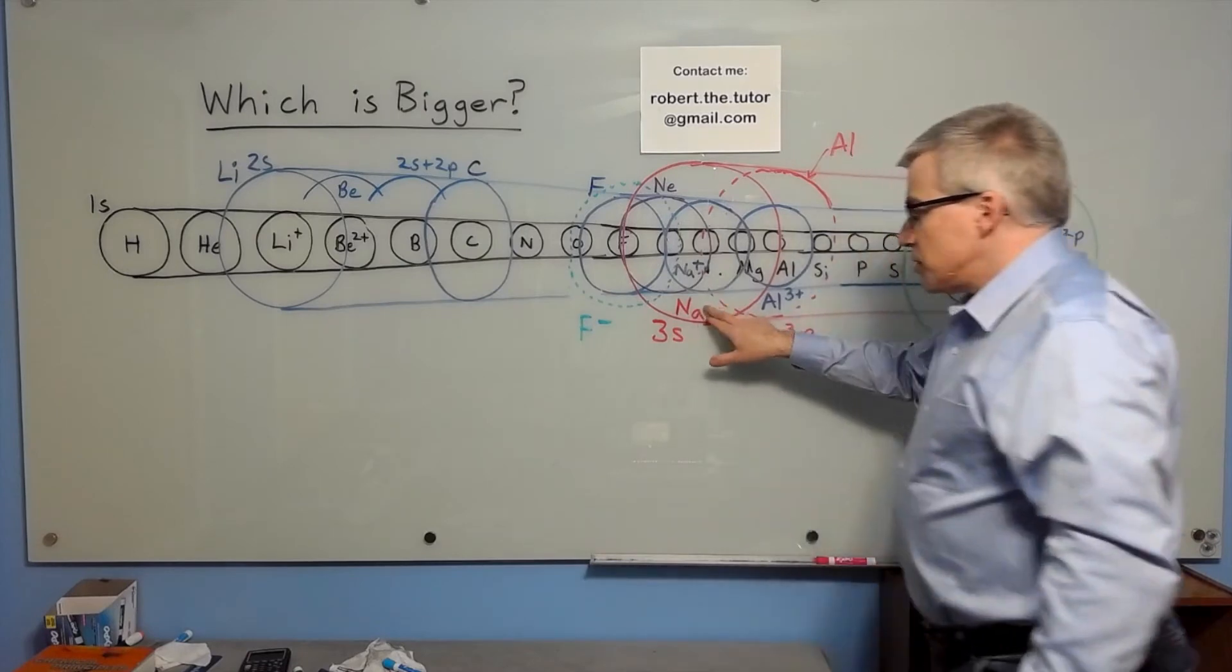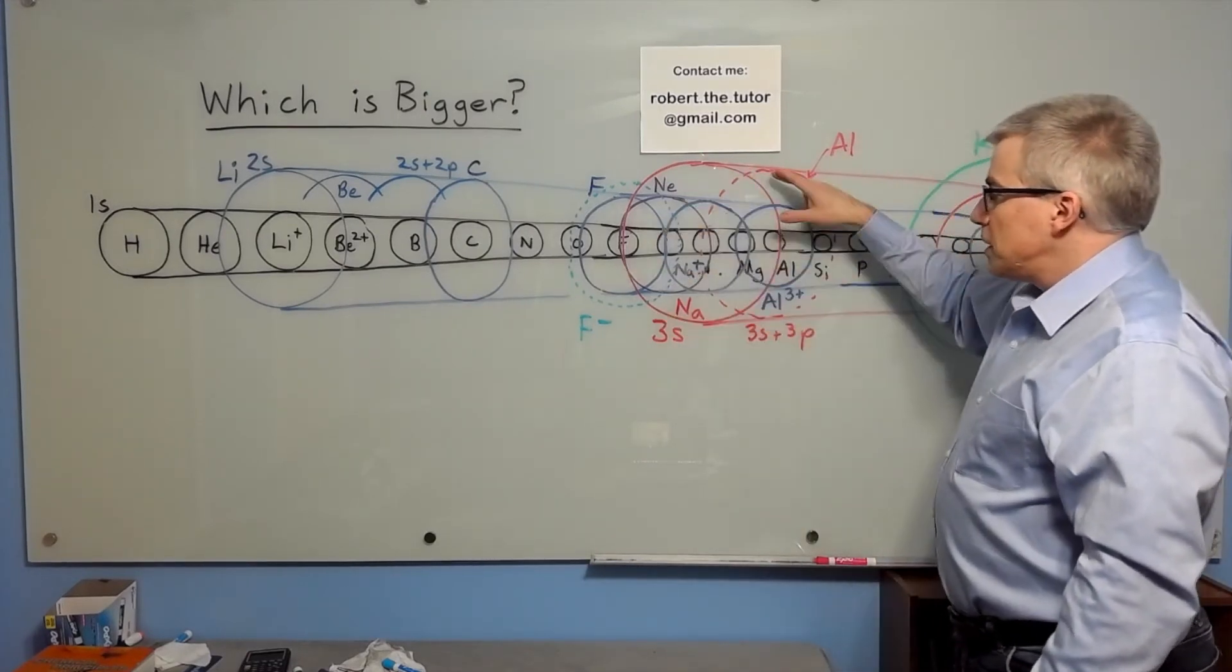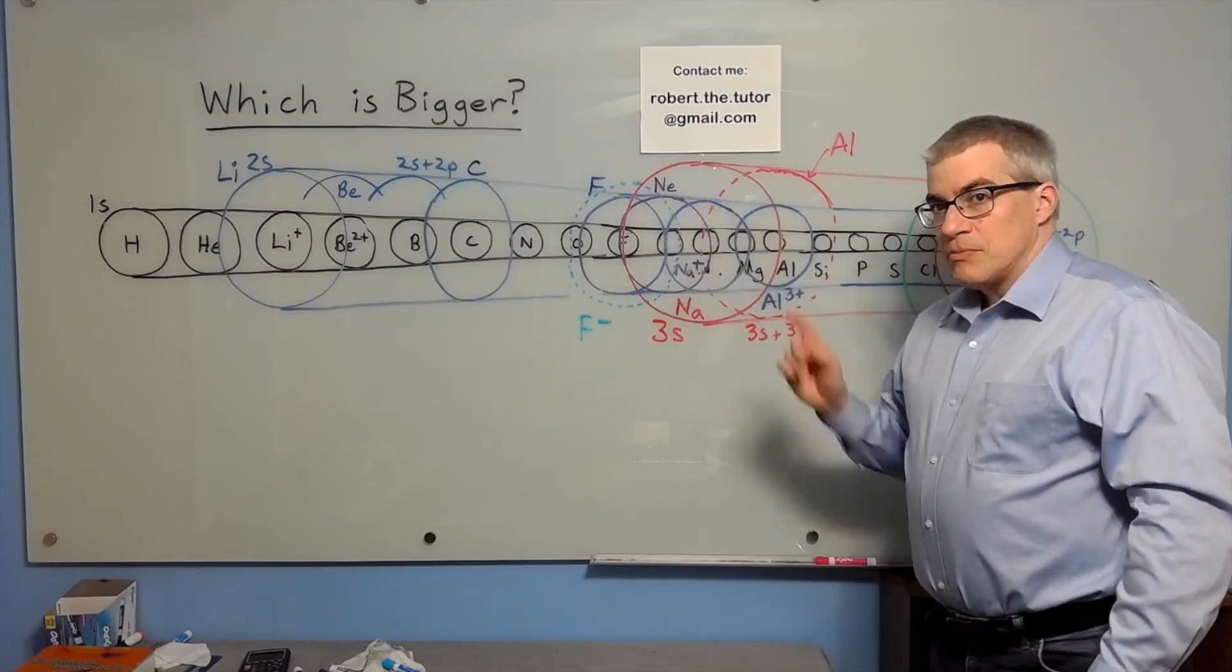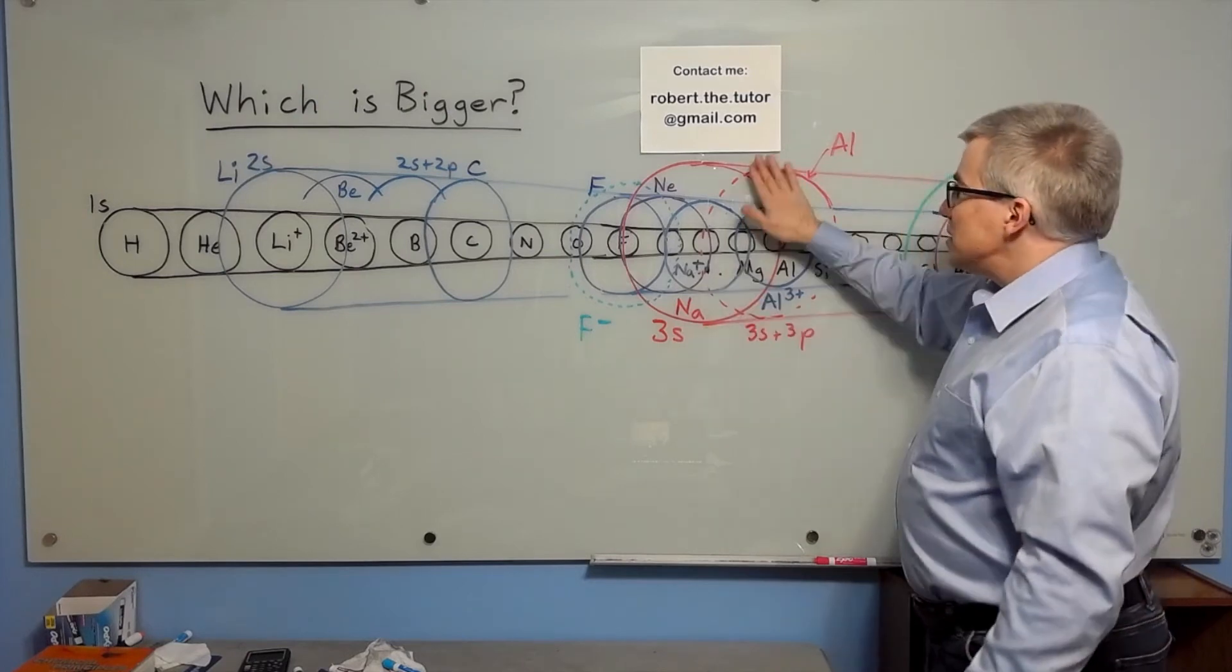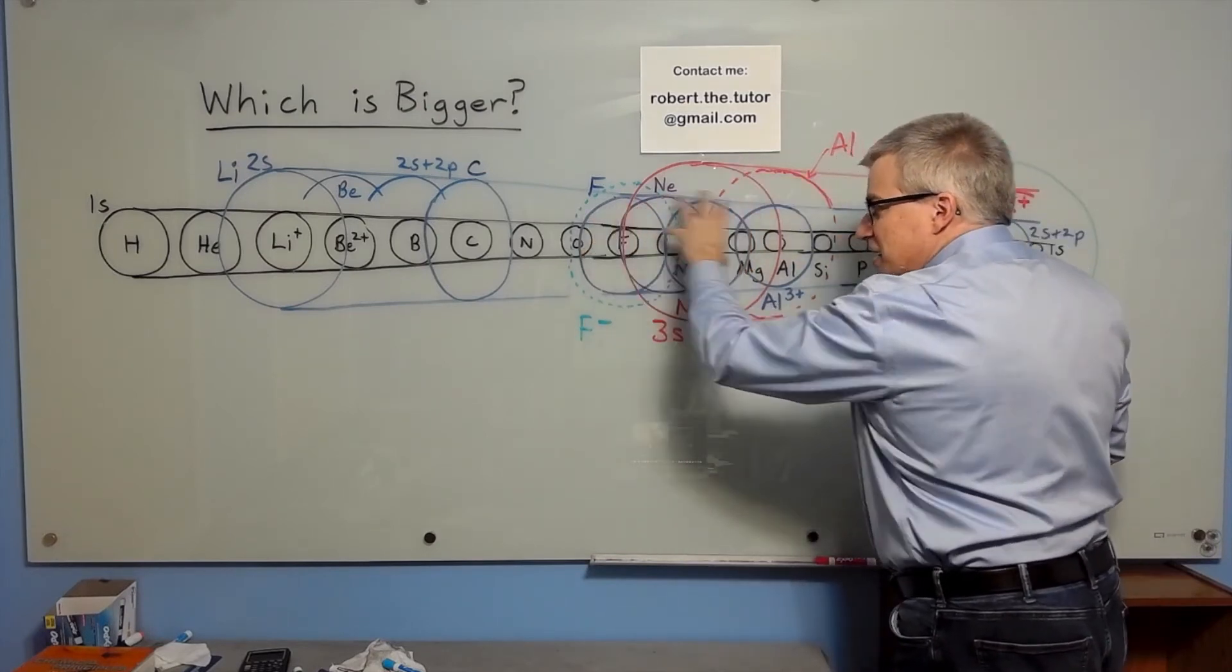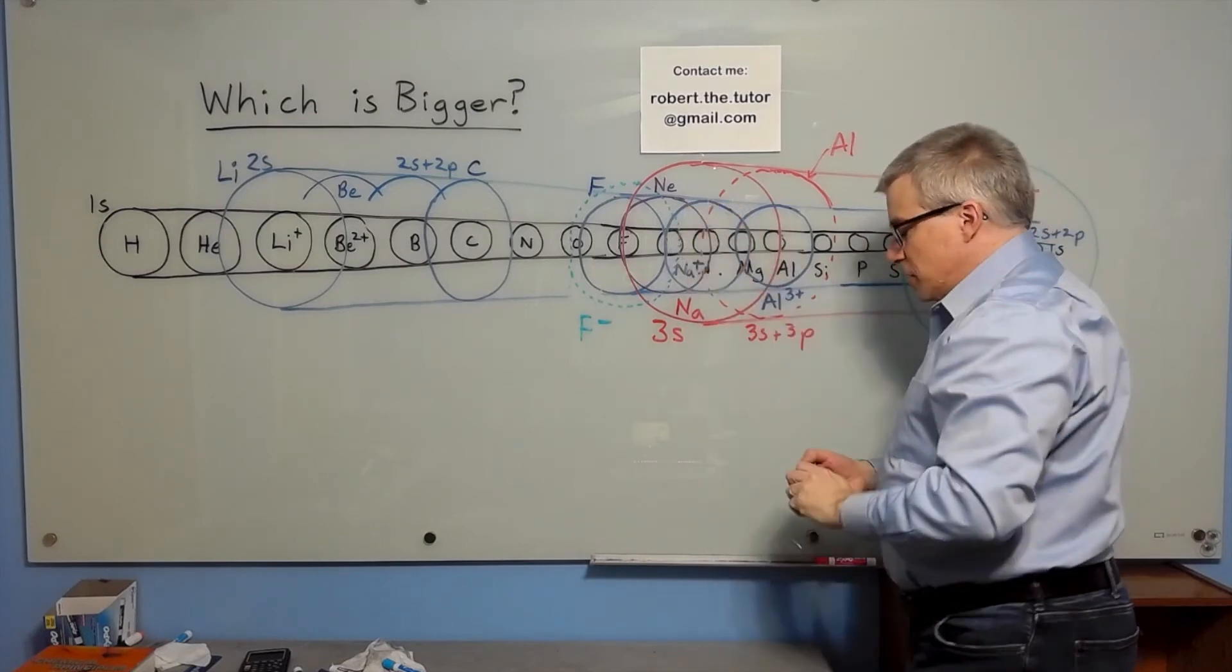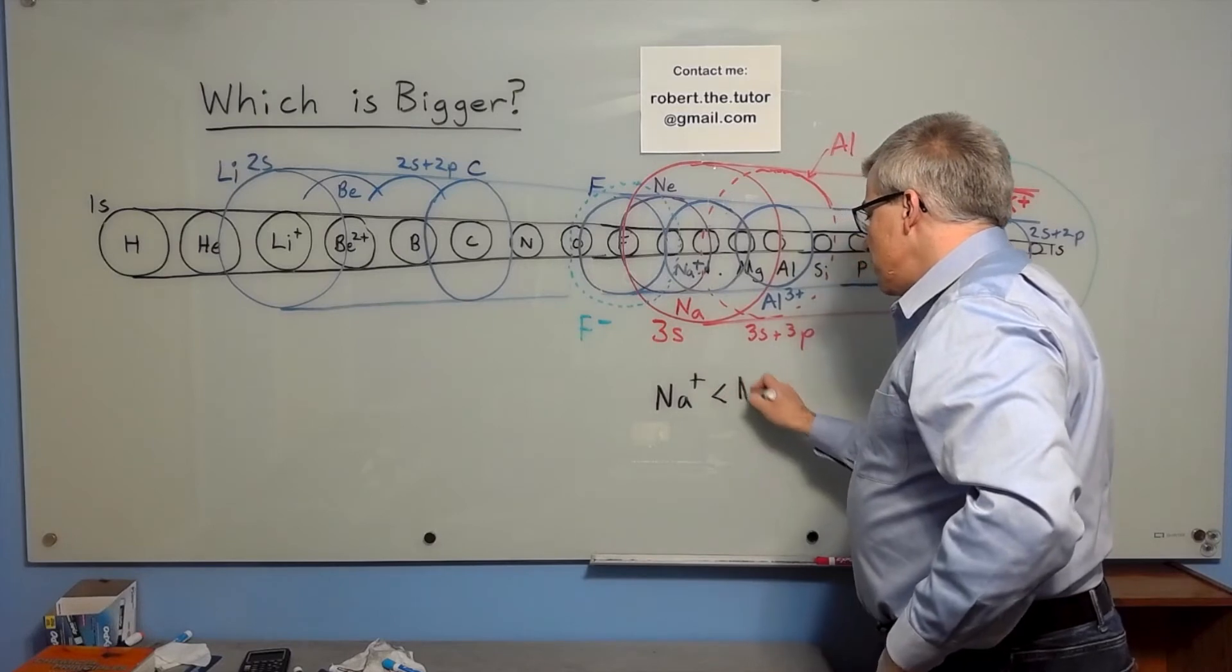Once you hit sodium, you're adding level three. And so a sodium atom is much bigger than a neon atom. But if you remove the outermost electron, this entire outer shell goes away and you're left with Na+, which is just like neon, but with one extra proton. So it's a little bit smaller, which is why Na+ is smaller than neon.